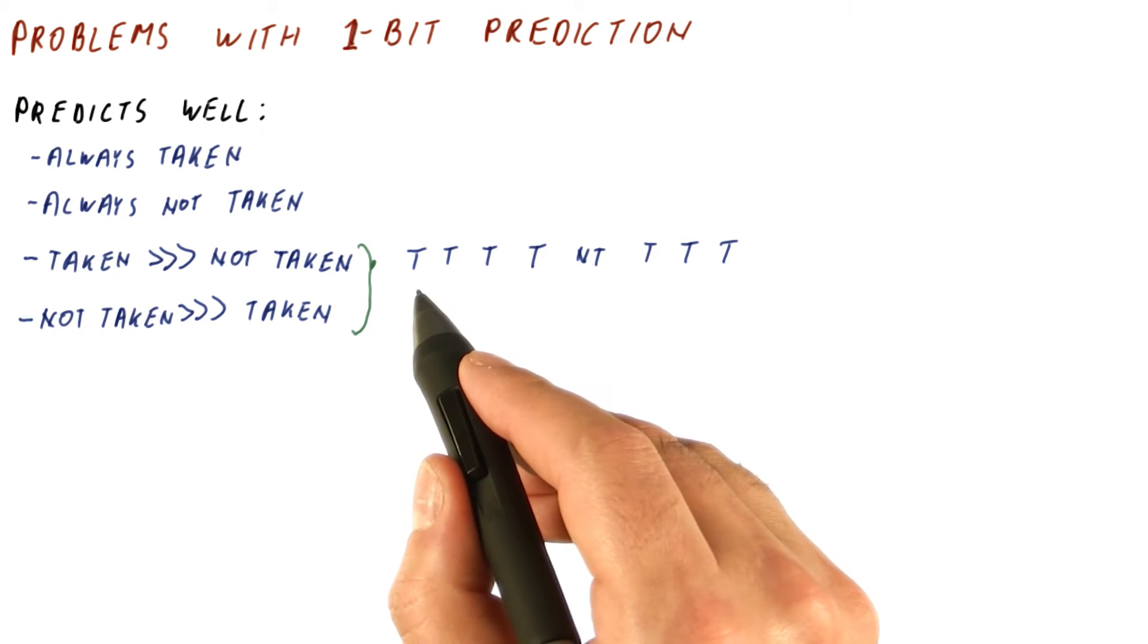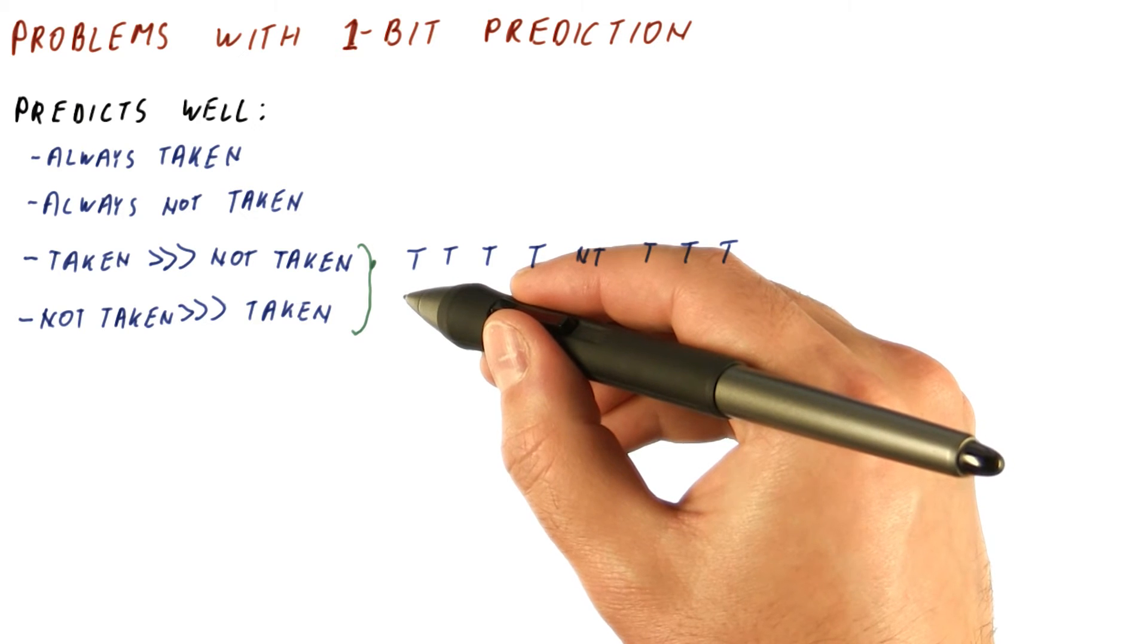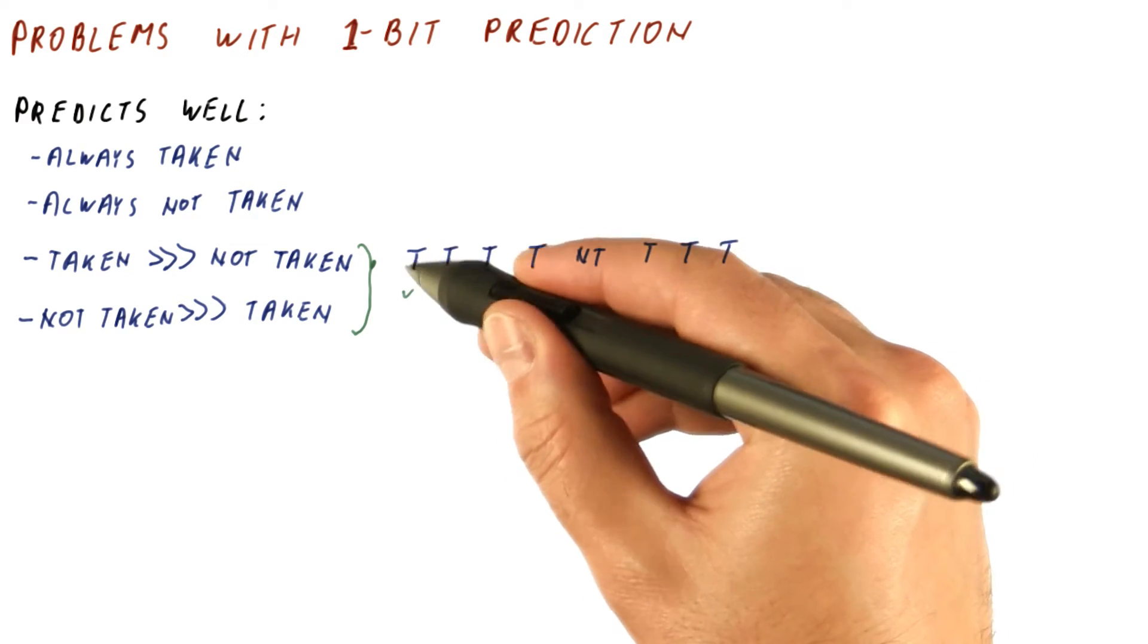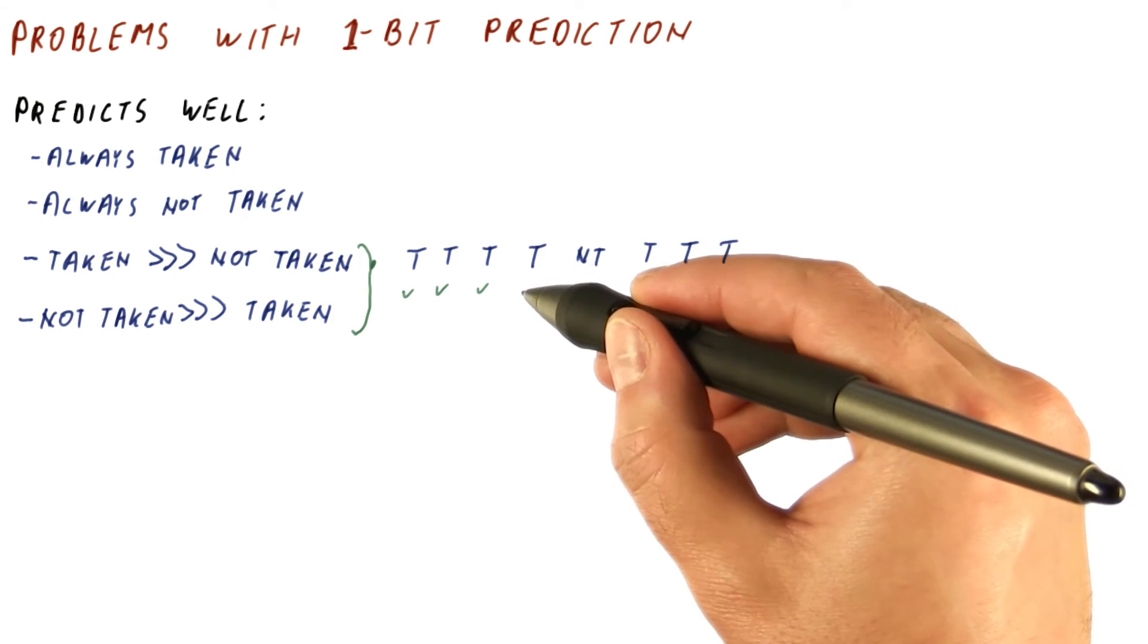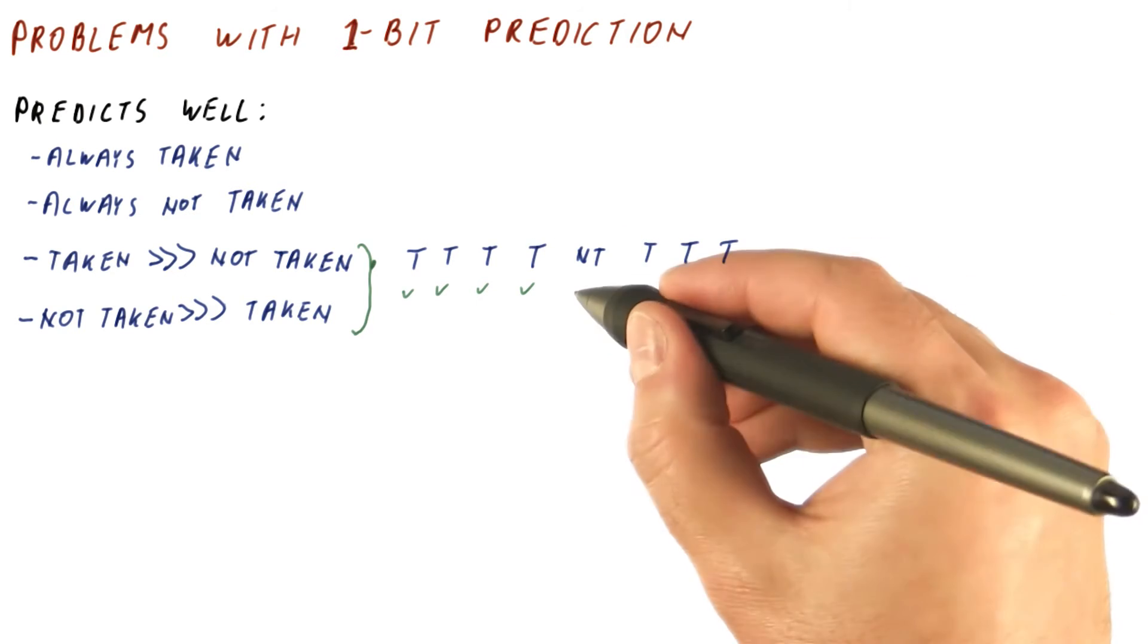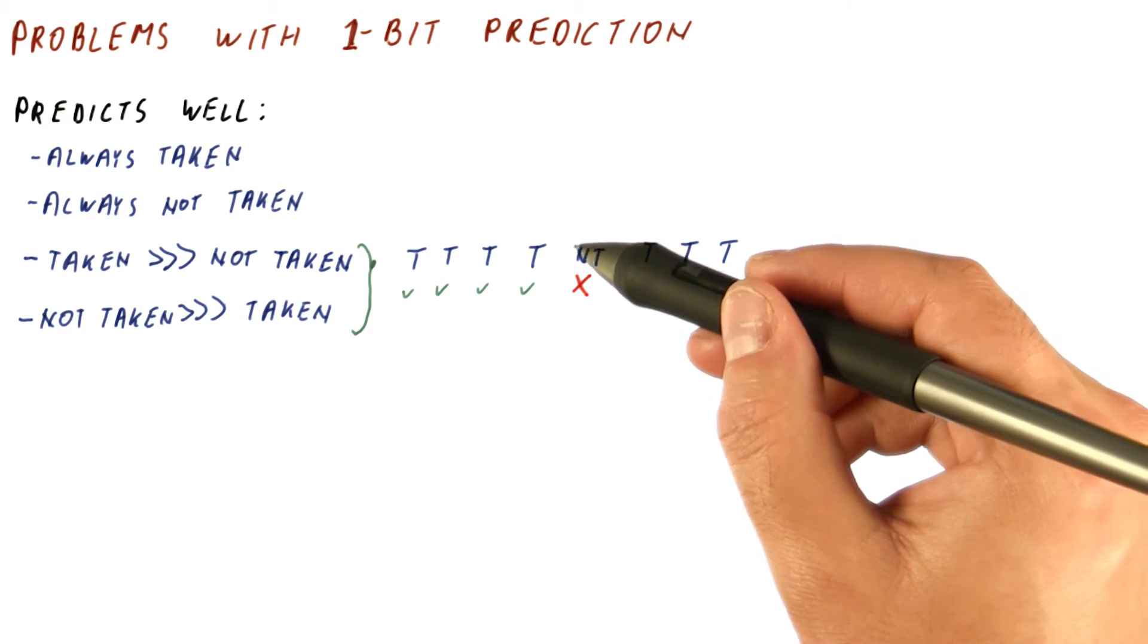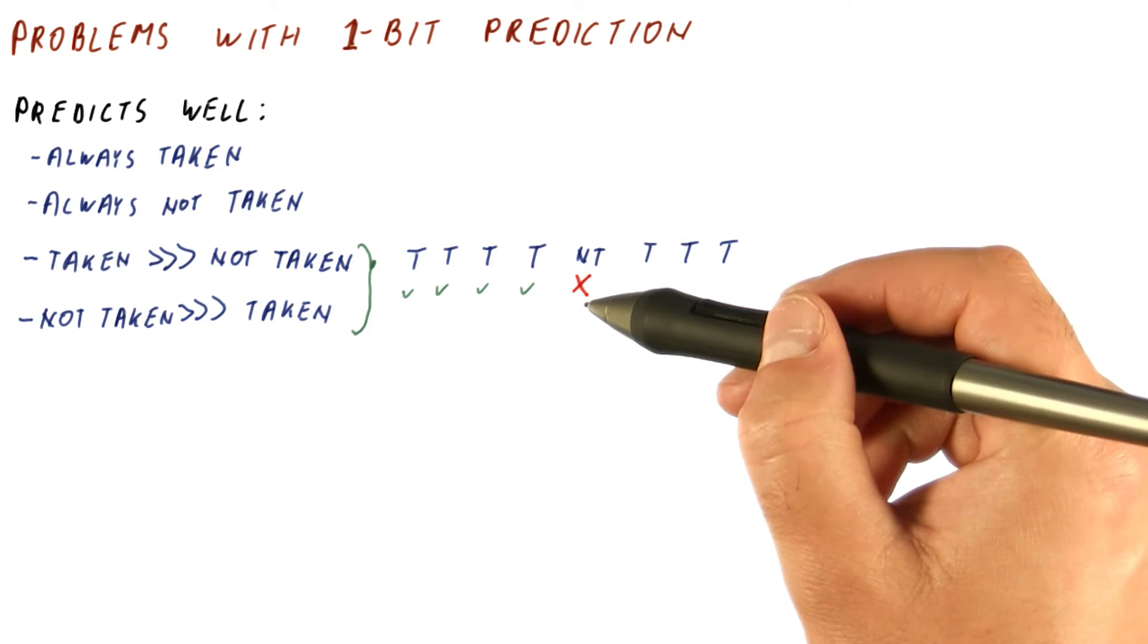Let's now look at whether the one-bit predictor will be right on this. It's been taken many times, so it's going to predict taken. And then because it's been taken, it's going to predict the next one is taken, the next one is going to be predicted taken, taken again. When we reach the not taken outcome, the last outcome was taken, so we will have a misprediction. This would not be much of a problem if not taken occurs very rarely, because we are basically mispredicting just the very rare occurrences.